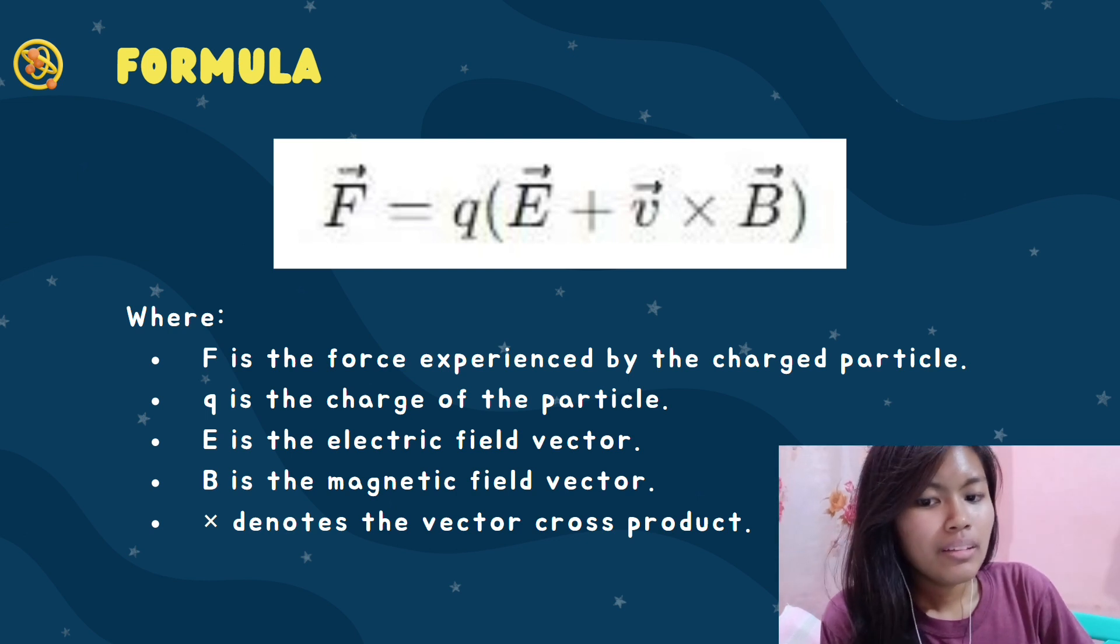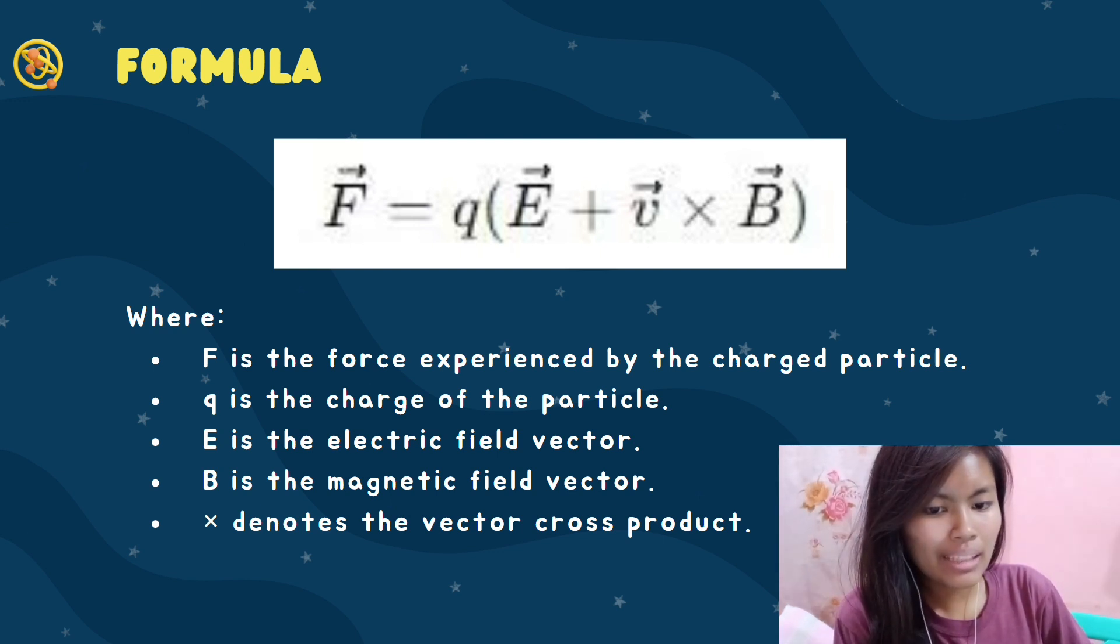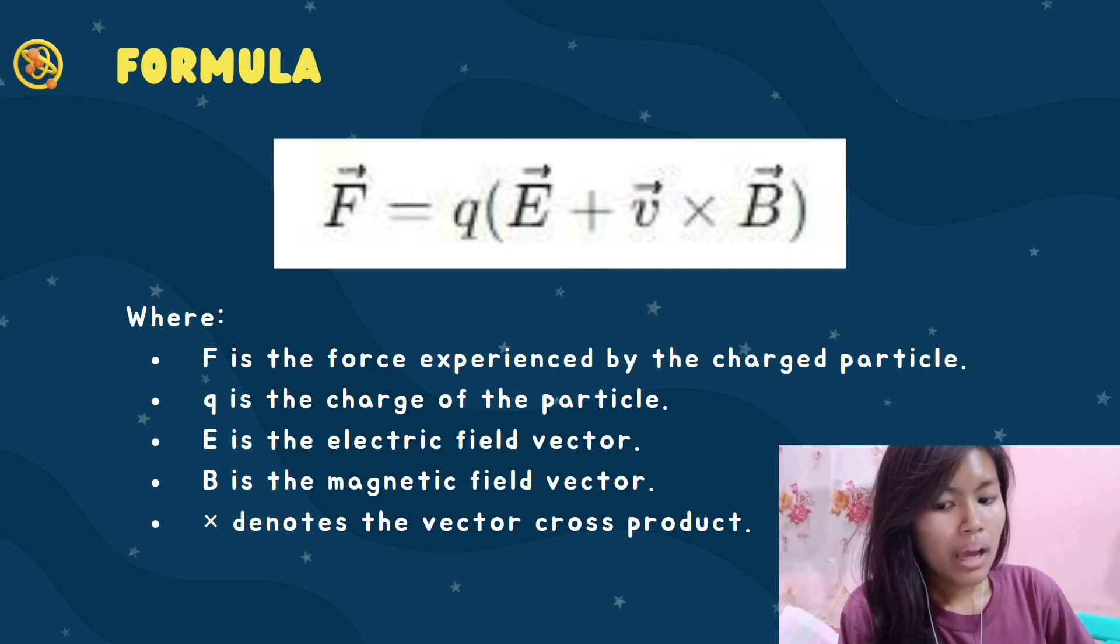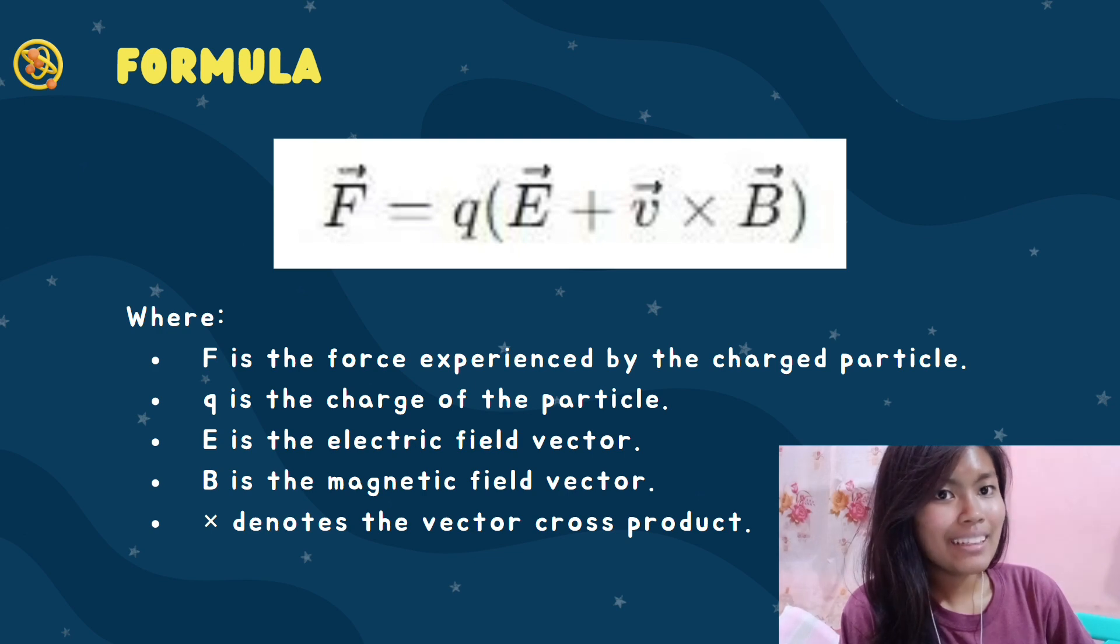Therefore, when we read this formula, the vector of the force equals the charge of the particle times the electric field vector plus the vector of the velocity of the testing charge moving through the magnetic force times the vector of the magnetic field.